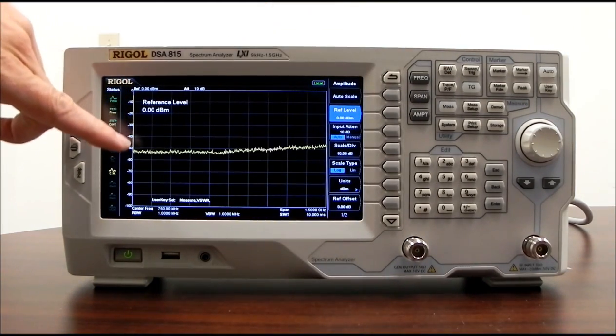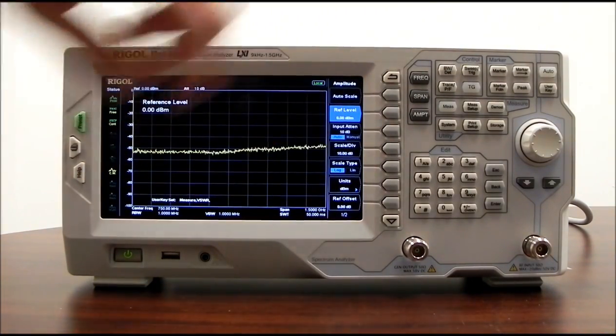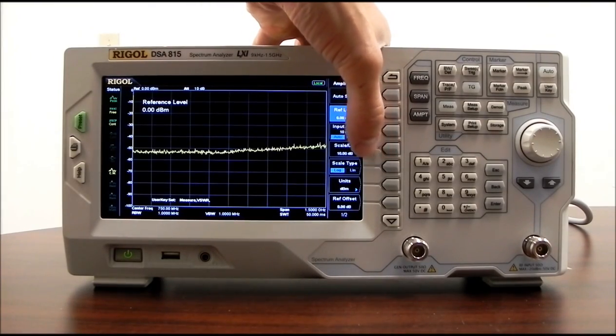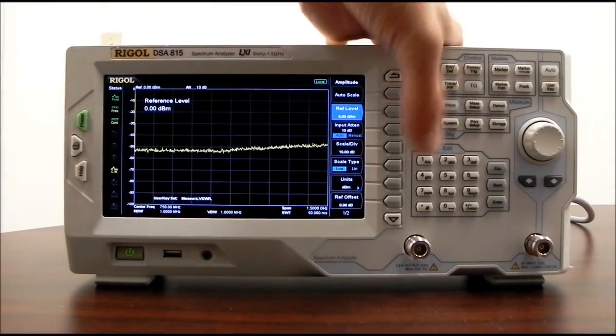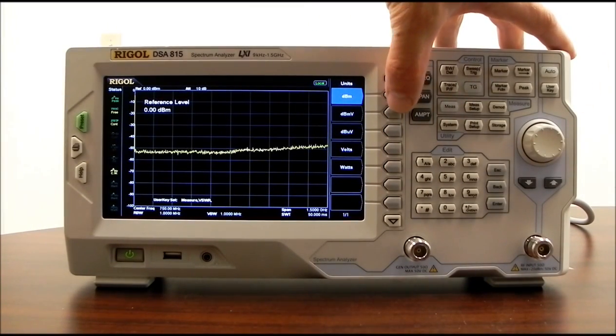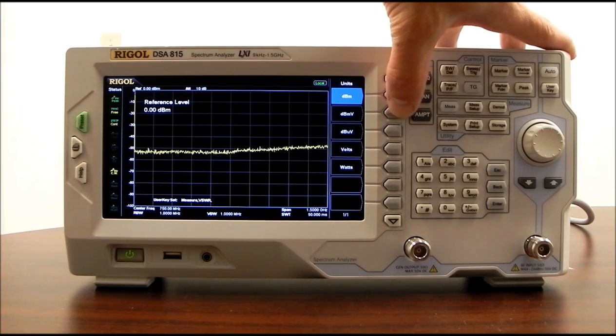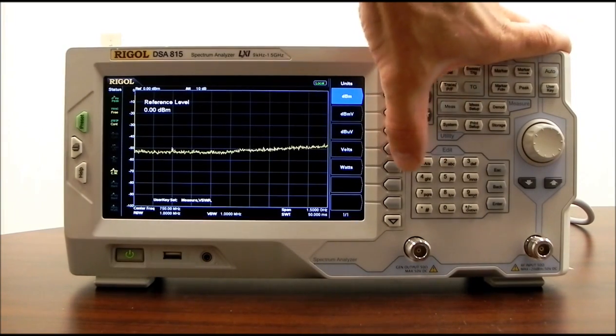Scale per division. We have 10 dB per division in this particular case, but we can change that very easily. You can also change that amplitude scale from log to linear. And units, this is an area that we get a number of questions about. You can set the units into dBm, dB microvolts, dBmv, dB microvolts, dB volts, or volts and watts. We can also set a reference offset.